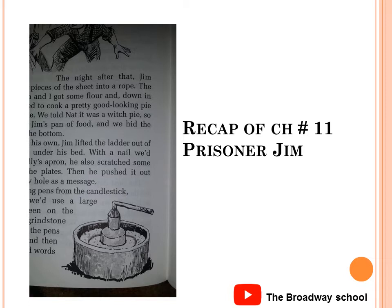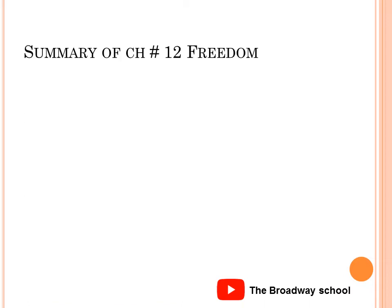After a great deal of planning, the boys convince the town that a group of thieves is planning to steal Jim that night. They collect Jim and start to run away. The local farmers follow them, shooting as they run. Huck, Jim, and Tom managed to escape, but Tom is shot in the leg.